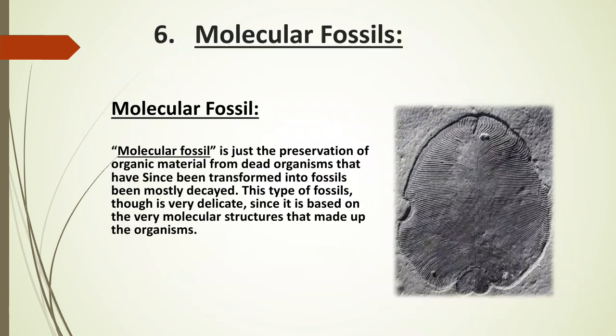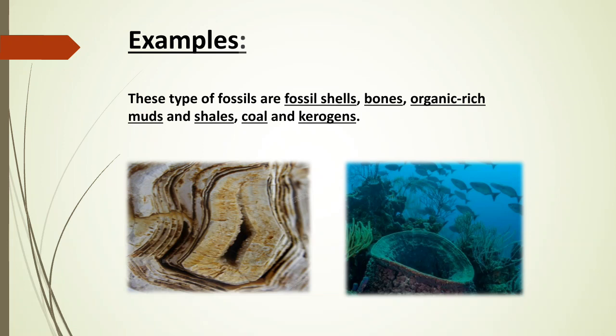Molecular fossils: molecular fossils involve the preservation of organic material from dead organisms that have since been transformed into fossils. This type of fossil is very delicate since it is based on the very molecular structure that made up the organism. Examples include fossil shells, bones, organic-rich mud, and coal, as you can see in the diagram.